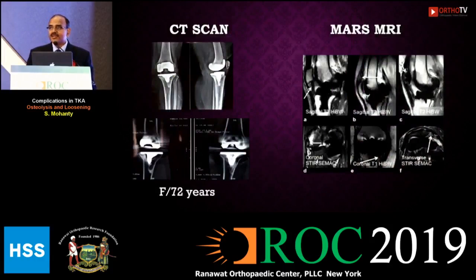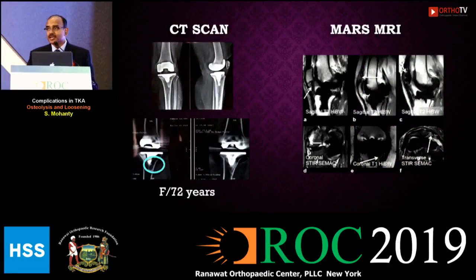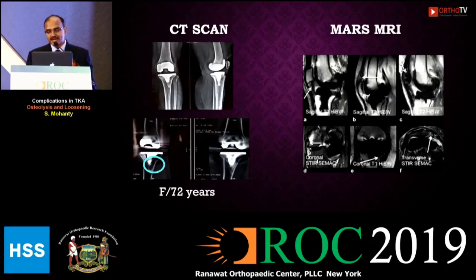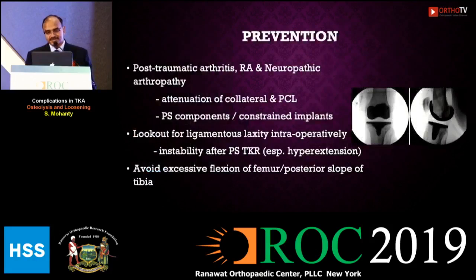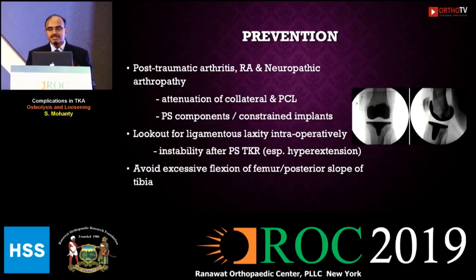If you are not able to see the osteolysis on plain films, or want further evaluation, CT scan will show the increased area of radiolucency. You can also do a MARS MRI to identify early osteolysis.